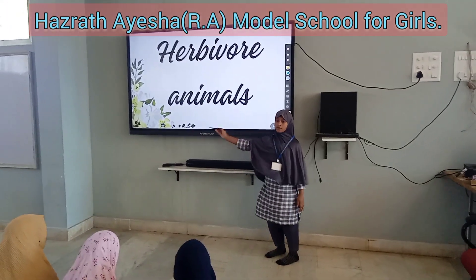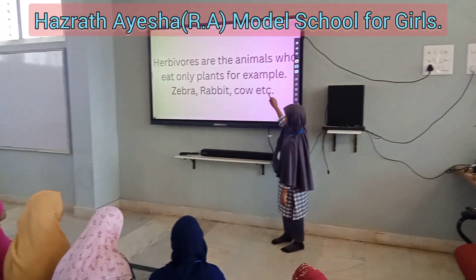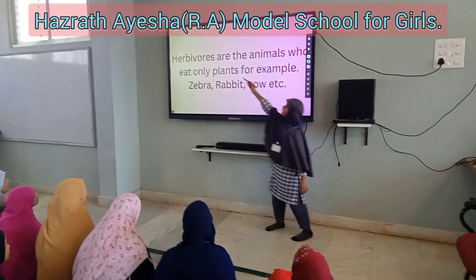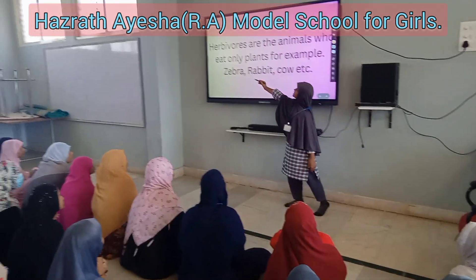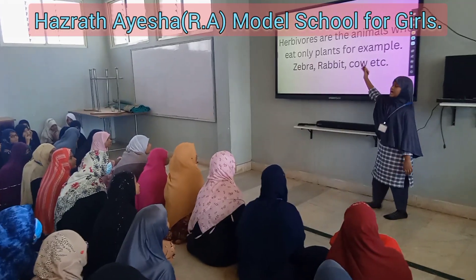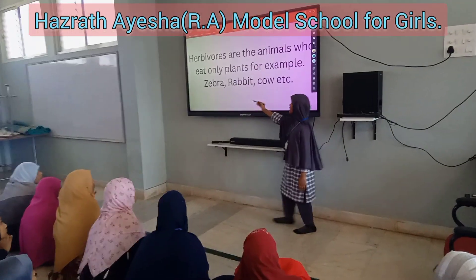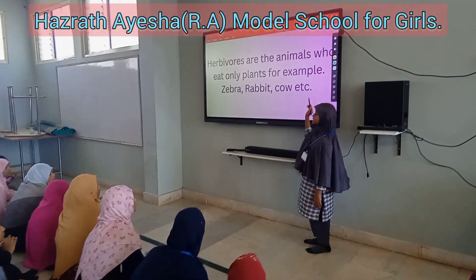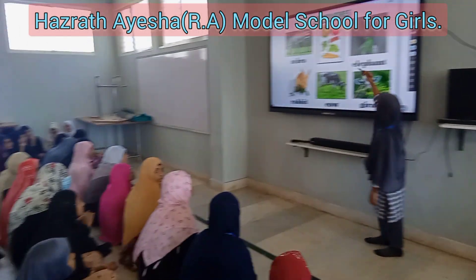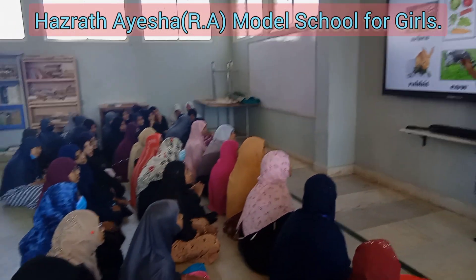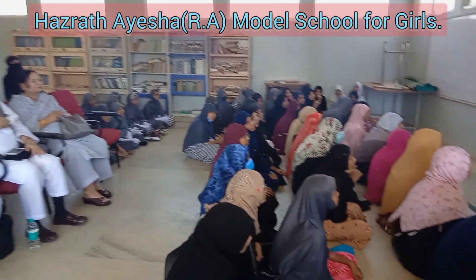Herbivore animals. Herbivores are the animals who eat only plants. For example, zebra, rabbit, cow, etc. These are the foods of herbivore animals.